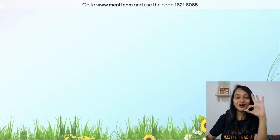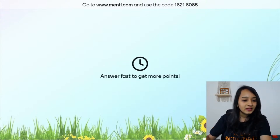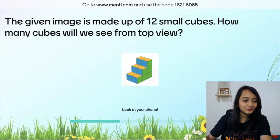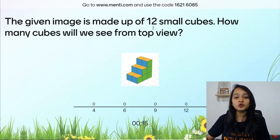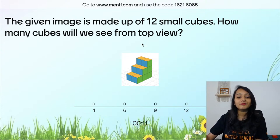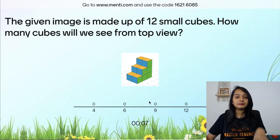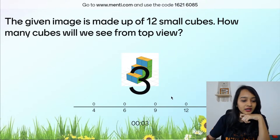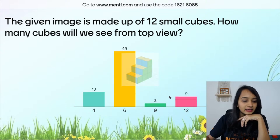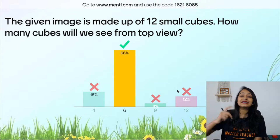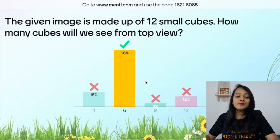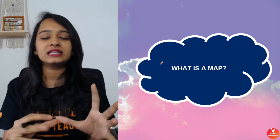Question 3: The given image is made up of 12 small cubes. How many cubes will you see from the top? Majority of you got it right — it is 6 yellow tiles that you can see from the top. Great work! I'm not going to show the leaderboard just yet. First let's finish today's topic quickly — it will take only 15 minutes.